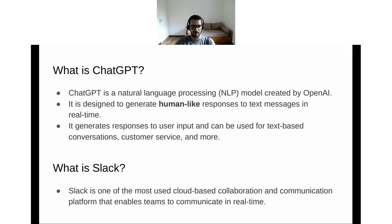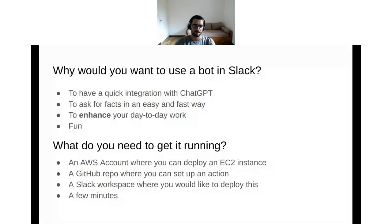I think that everybody here knows what Slack is — it's one of the most used collaboration platforms, and we use it on a day-to-day basis. So, why would you like to use a bot in Slack to have a quick integration with ChatGPT? To ask for facts in an easy and fast way, to enhance your day-to-day work, and just for fun, of course.